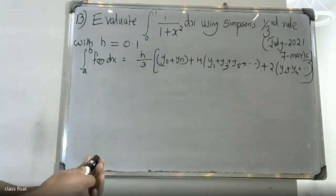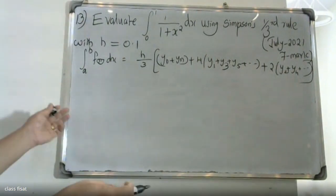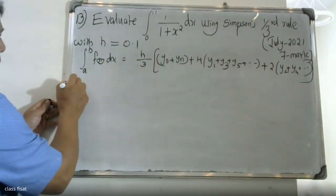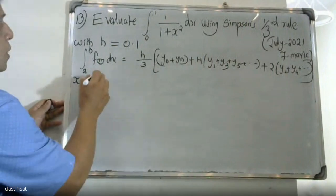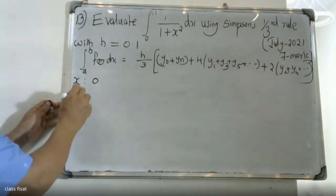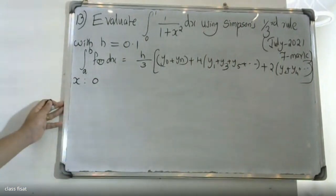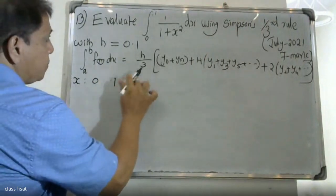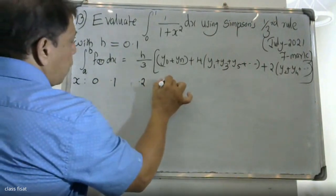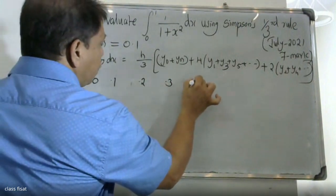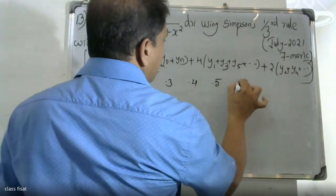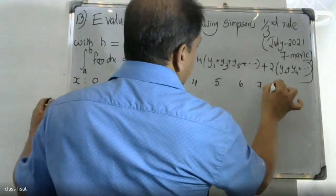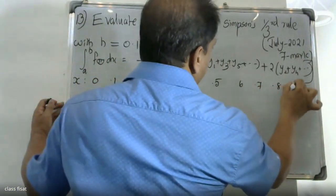Here h is equal to 0.1. The x values are 0, 0.1, 0.2, 0.3, 0.4, 0.5, 0.6, 0.7, 0.8, 0.9, and 1.0.